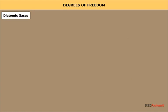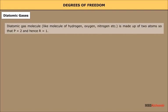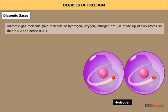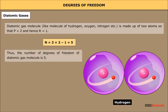Diatomic gases: a diatomic gas molecule like hydrogen, oxygen, or nitrogen is made up of two atoms, so P = 2 and hence R = 1. Therefore, n = 3 × 2 - 1 = 5. Thus the number of degrees of freedom of a diatomic gas molecule is 5.